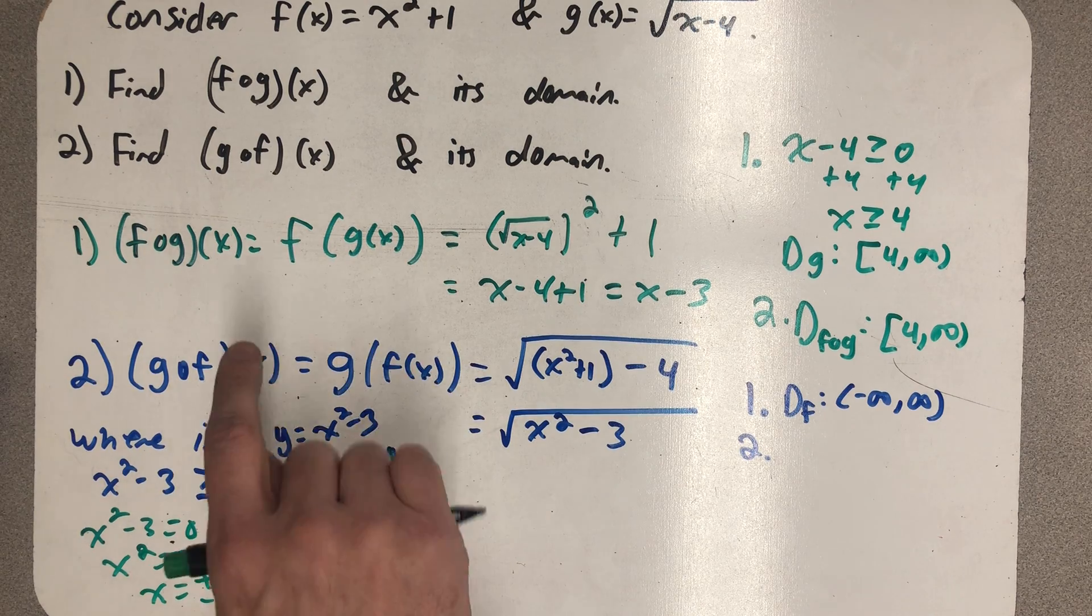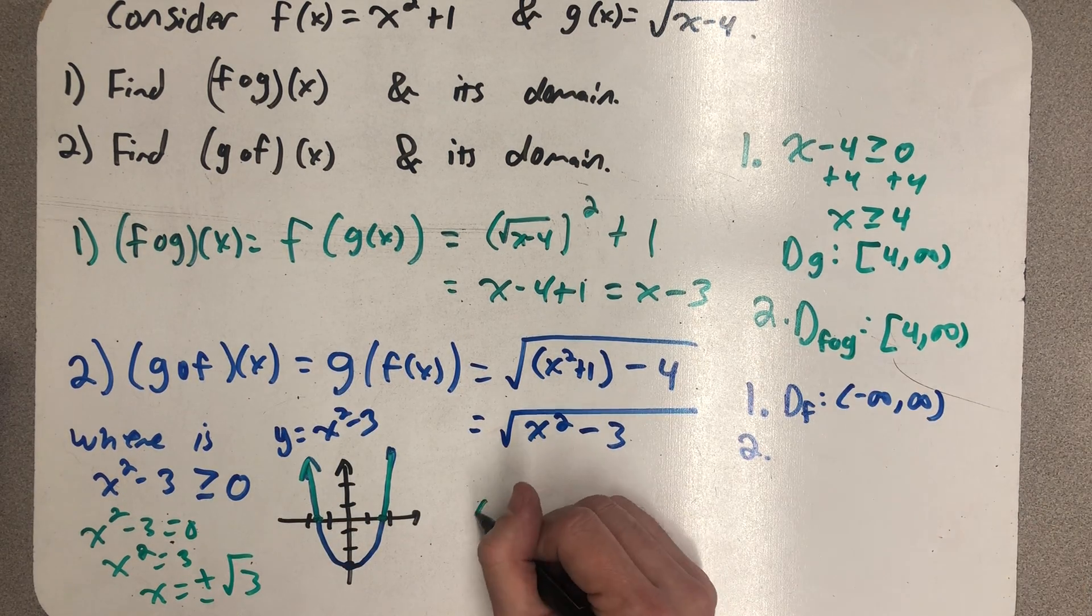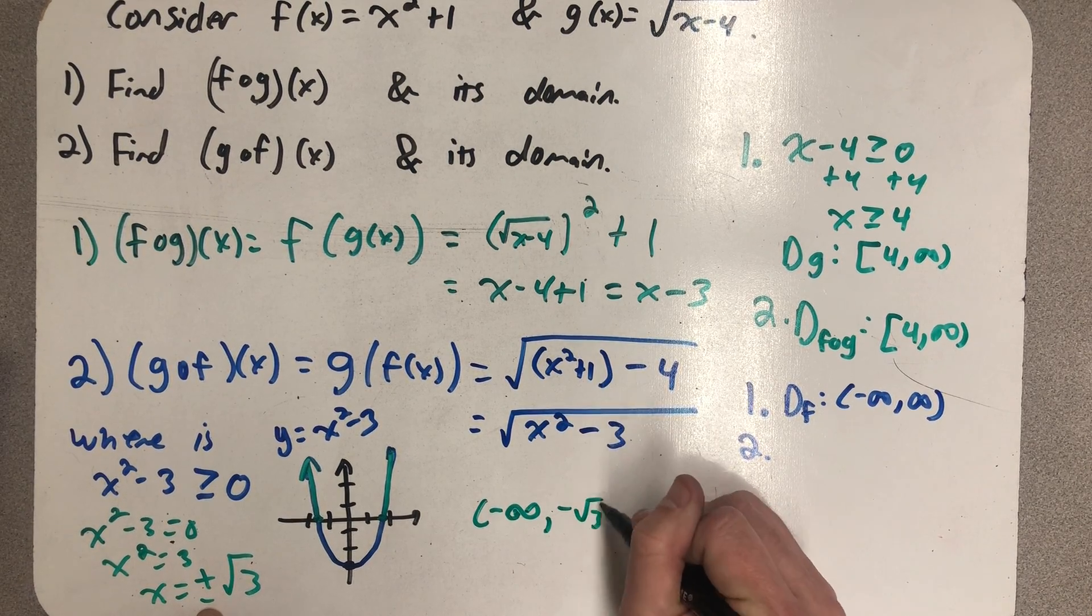So this part, all of those x squared minus 3's are positive. Those are fine. Well, that would be from minus infinity until I get to minus root 3.